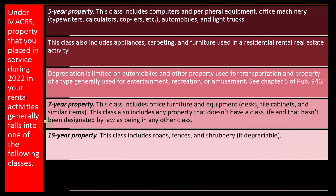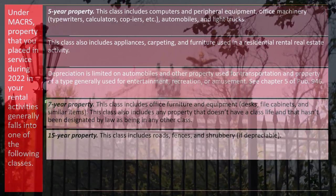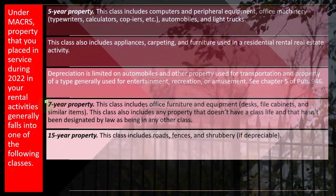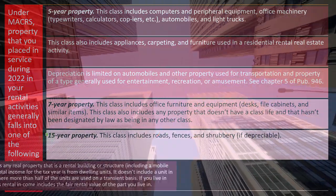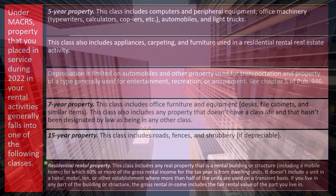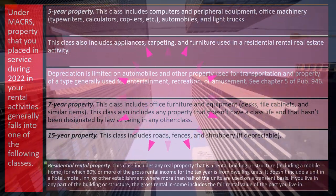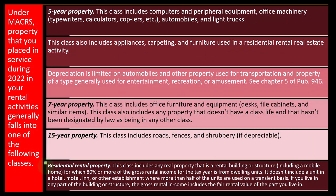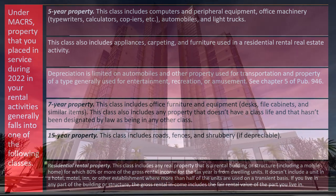If you find something that doesn't neatly fit into a specific category, it defaults to seven-year property. Fifteen-year property includes roads, fences, and shrubbery if depreciable. Residential rental property is a separate class: it includes any real property that is a rental building or structure — including mobile homes — for which 80% or more of the gross rental income for the tax year is from dwelling units. It does not include units in a hotel, motel, or other establishment where more than half of the units are used on a transient basis.